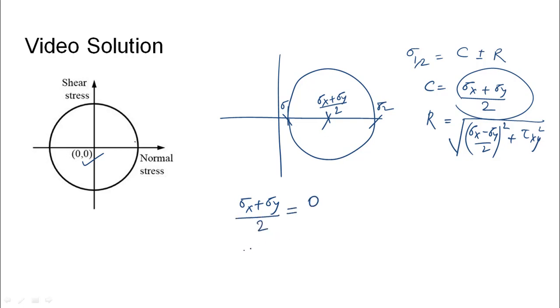In this case the center lies at the origin, so Sigma x plus Sigma y by 2 would be 0. This means that Sigma x plus Sigma y is 0, which indicates that the normal stress component of principal stress is 0. So this element here is in pure shear.